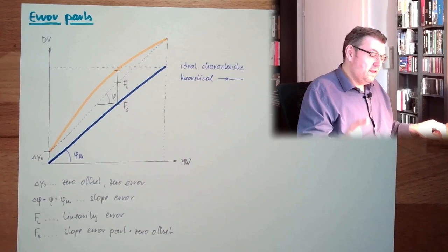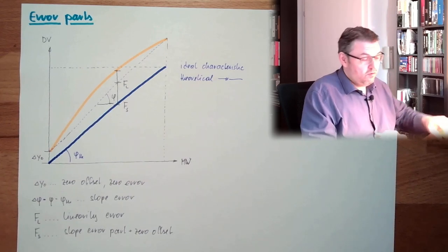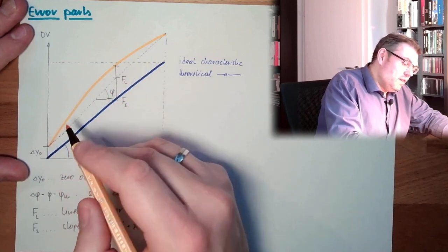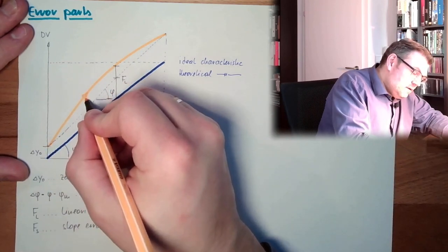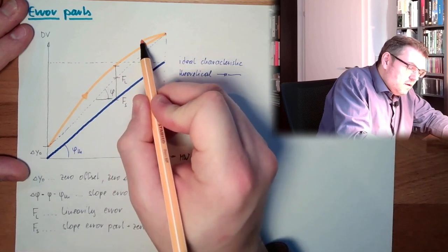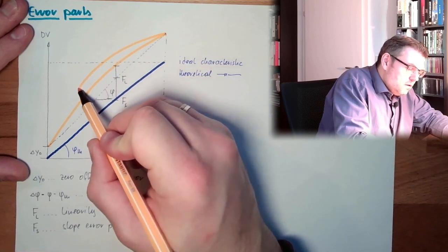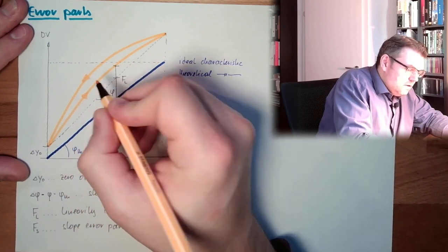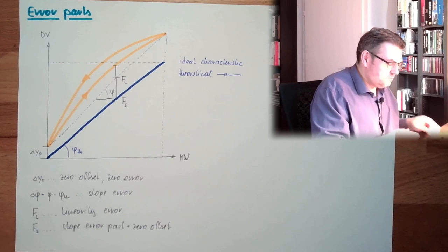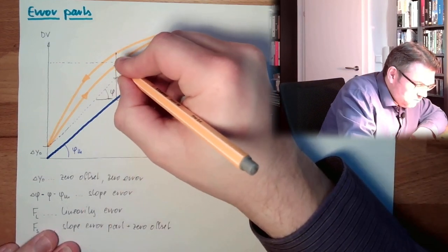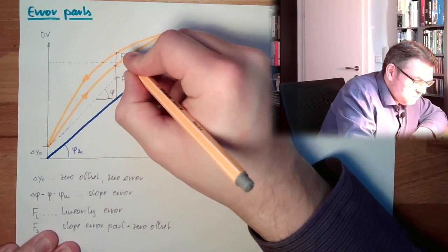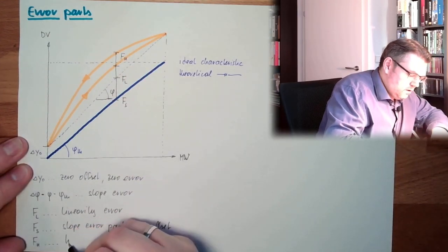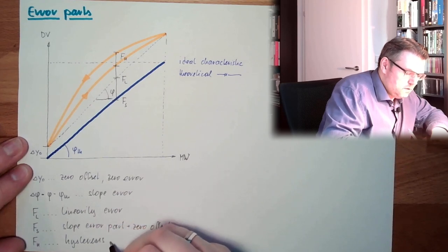And then we might have the situation, or often have the situation, that we are not having one line, but one line for rising values and another line for falling values. So then we also have here a hysteresis error.